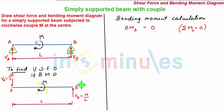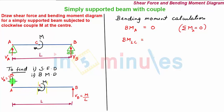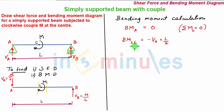As we move the section from point A towards B, we encounter a couple at point C. Taking a section towards the left of C, the bending moment is given as VA multiplied by L/2, which is the moment caused by the support reaction VA. This is an anti-clockwise couple, and an anti-clockwise couple on the left-hand side of the section is considered negative. So we have minus VA into L/2.